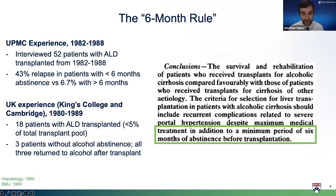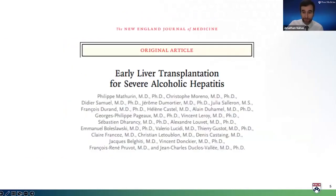An early case series from Pittsburgh observed that ALD patients transplanted with less than six months of sobriety had higher relapse rates than those transplanted with more than six months. Around the same time, a UK report documented three patients transplanted without pre-transplant sobriety who all returned to drinking. As a result, a consensus recommendation for a six-month waiting period of abstinence was advised and adopted by most transplant centers. Until recently, adherence to this requirement essentially excluded patients from consideration. However, due to high short- and medium-term mortality in severe alcohol-associated hepatitis, many of these patients don't have six months to wait.